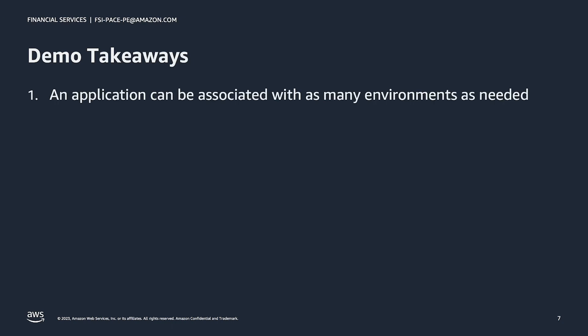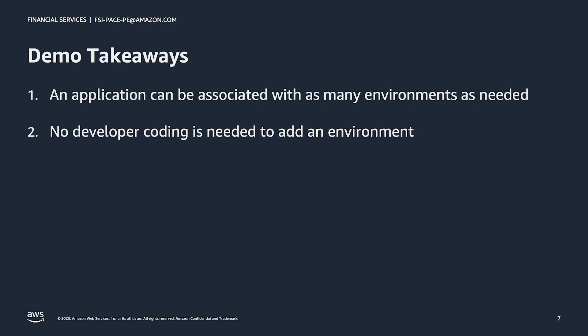By toggling between application environments using the environments dropdown, developers can view and manage their application state for any environment they choose. The takeaways from this demo are that an application can be associated with as many environments as needed, no developer coding is needed to add a new environment — it's all automated through the UI — and new environments can be set up at any time, even after the application was created. The only requirement for adding an application environment is that the environment must support the tech stack that the application uses.